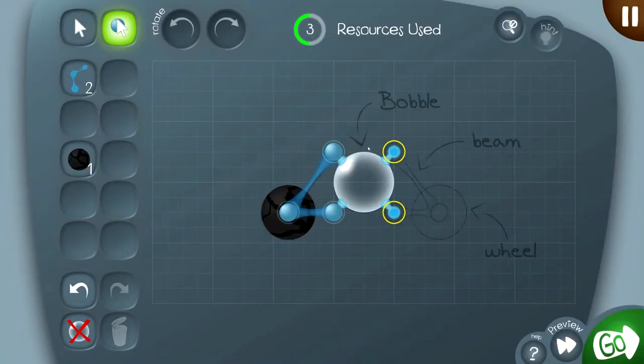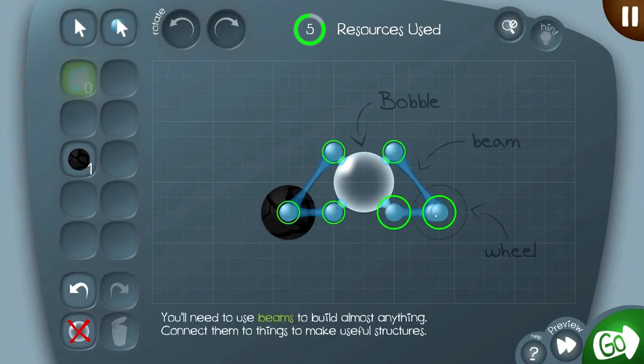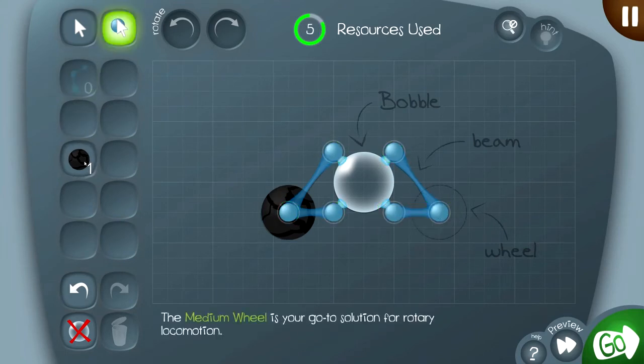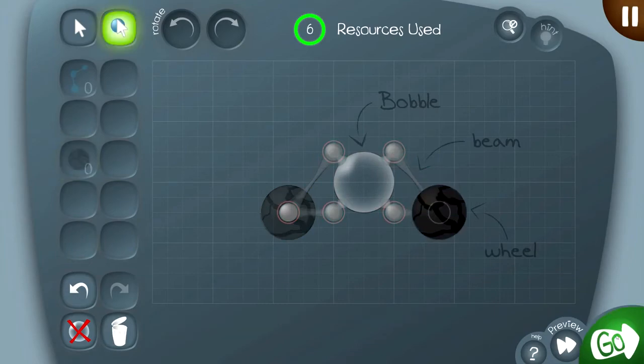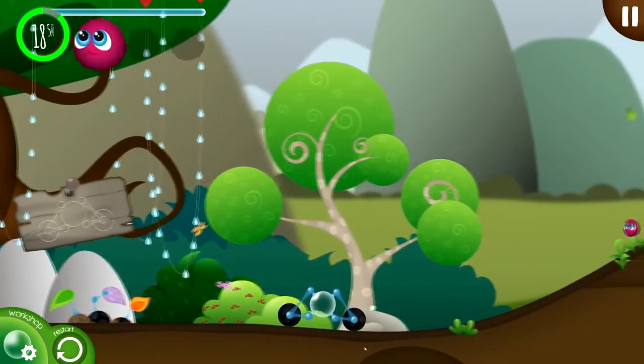Just as a little convenience, you can actually drag beams straight out of these nodes on the bobble here when there's nothing else attached. Let's put our last wheel in, and we'll hit go, and off we go. So now we're rolling along quite nicely.